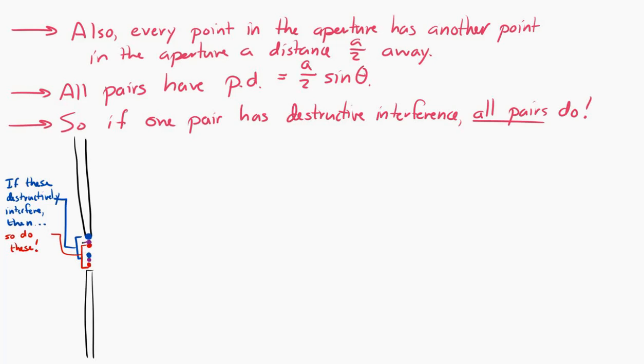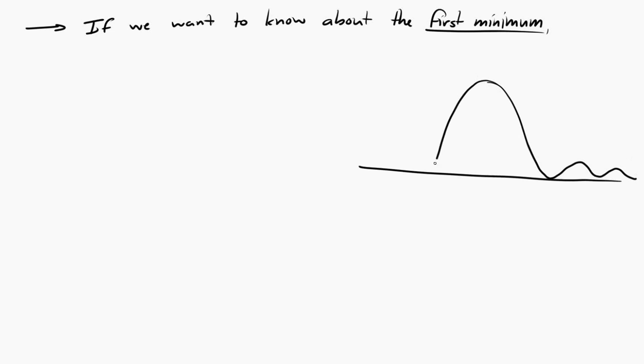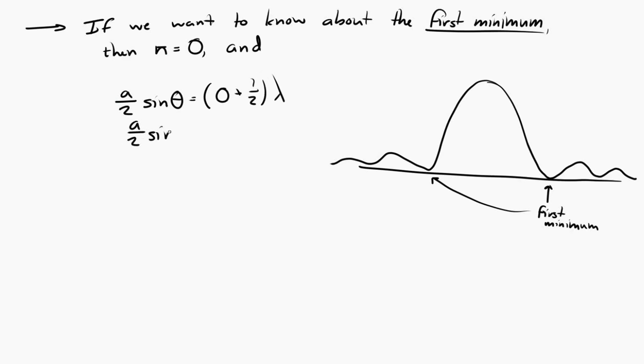Now, if we only want to know about the first dark spot on the screen, the dark spot that is closest to that central bright maximum, then that's the point where n equals 0. We call that the first minimum, the dark spot that's closest to the central maximum. So we can use our expression, and we can set n equal to 0 if it's the first maximum. And we get, let's see, lambda over 2 is equal to a over 2 sine theta. So lambda is equal to a sine theta.